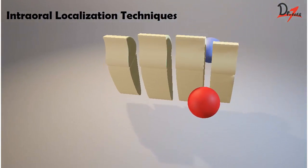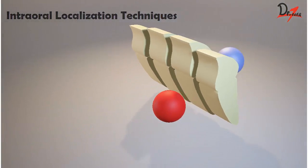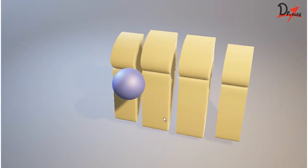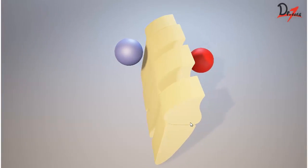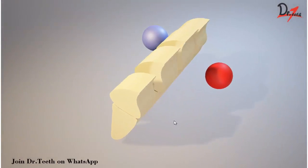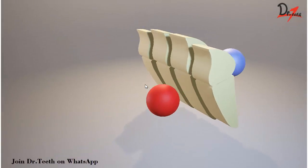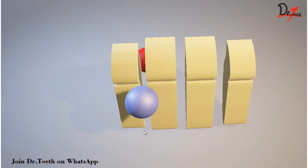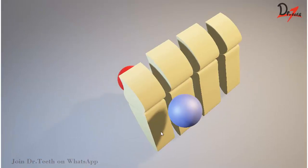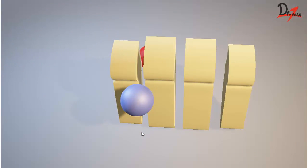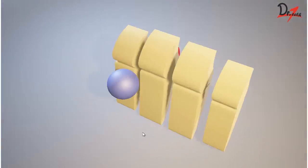So let us see what is this SLOB rule. We have our model here, and if you leave this model it rotates on its own, so I am just going to hold it here. According to the buccal object rule, if we change the projection angle, then the relative position of the radiographic image will change.